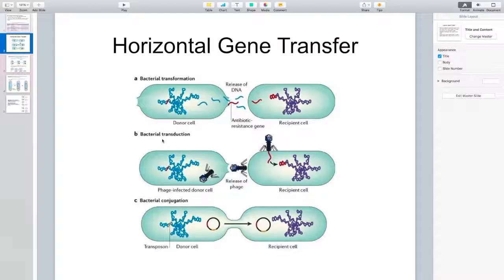The other method of horizontal gene transfer is transduction, which is really interesting if you think about it. In this method, the donor cell DNA will be picked up by a third party, which is generally a bacteriophage.